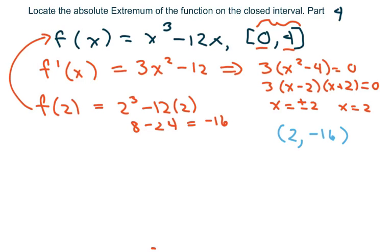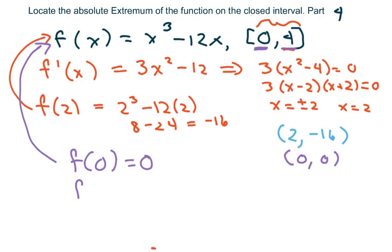Now, the only other two values I need to check are 0 and 4. So clearly, when I plug in 0, I'm going to get 0. So 0 minus 0, and we're plugging it in here to get 0 comma 0. And then when I plug in 4 for my right endpoint, I'm going to get 4 cubed minus 12 times 4. And that equals 16.